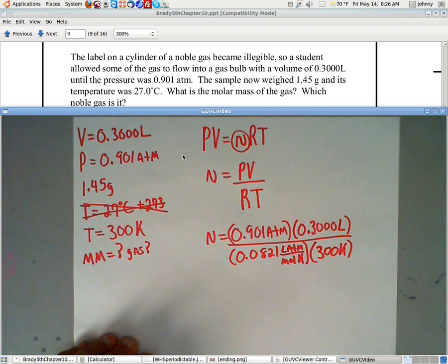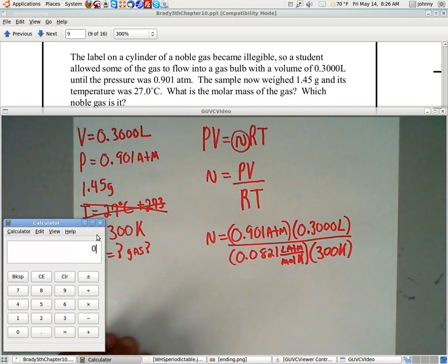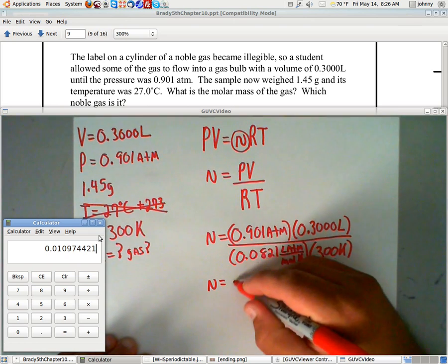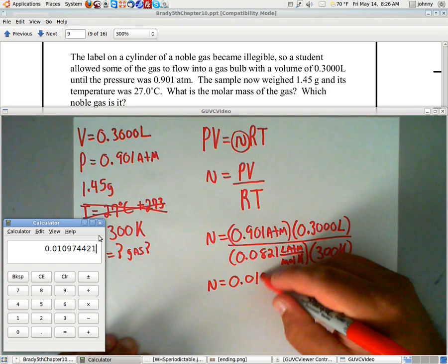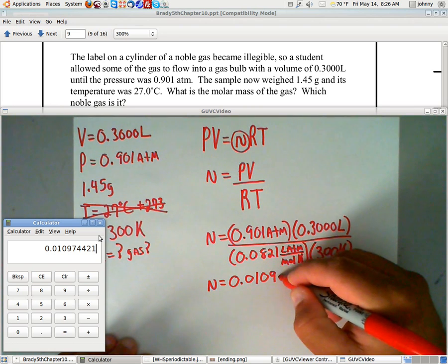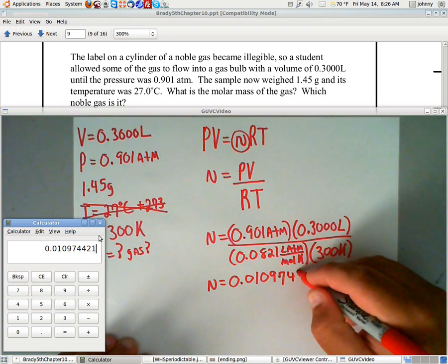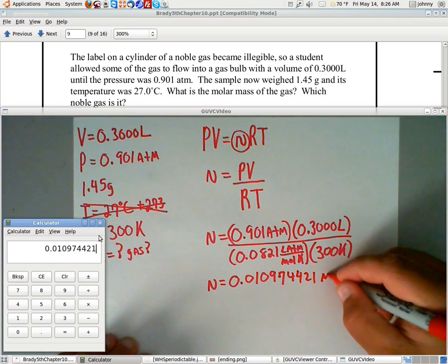Now, we get a handy dandy calculator, which we've got one right here. Let's punch this in. We've got 0.901 times 0.3000, that's the two top numbers, divided by 0.0821, divided by 300. Now, when we do this, we end up getting n equals 0.010974421. And remember, this is moles of the unknown gas.